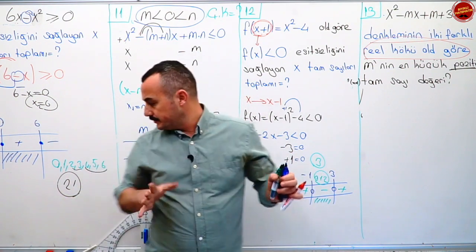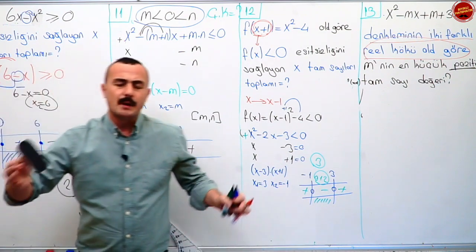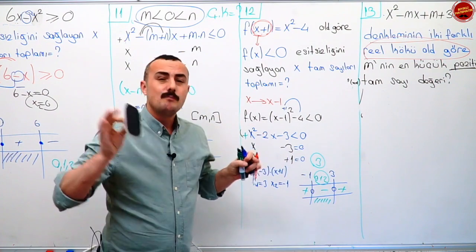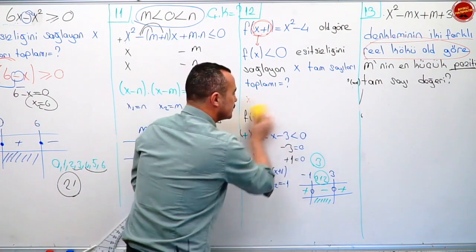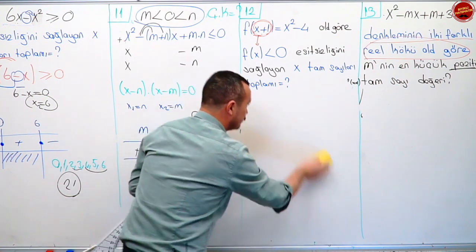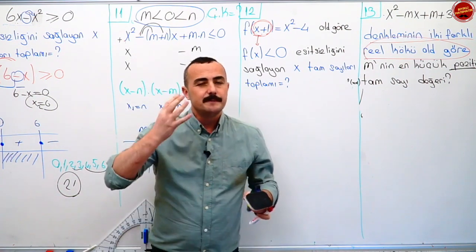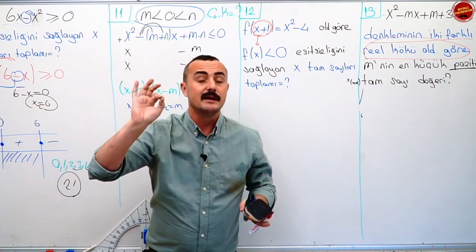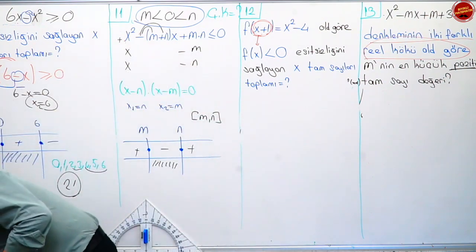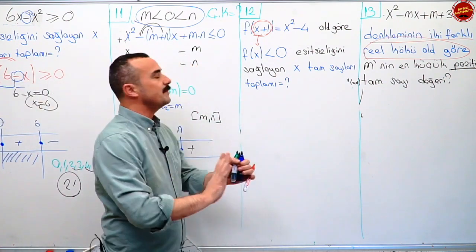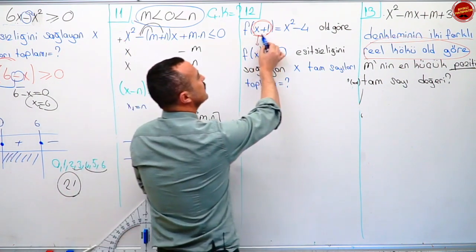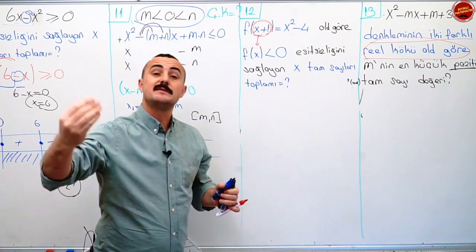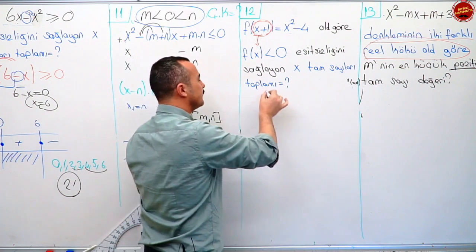Şimdi bu bir çözüm. İsteyen bu çözümü yapabilir. Ama parabol bilgisine hâkim olanlar, analiz yapmayı başaranlar bu soruyu daha kolay çözebilirler. Ben o şekilde de çözeceğim. Size dediğim gibi bu çözümleri iyice öğrenin. Sorunun içerisinde artı, eksi, artı diye sormayacaklar. Bana Fx artı birin x kare eksi dört olduğunu vermiş. İkinci dereceden eşitsizlikler paraboldür. O zaman bu parabolün grafiğine bir bakalım.